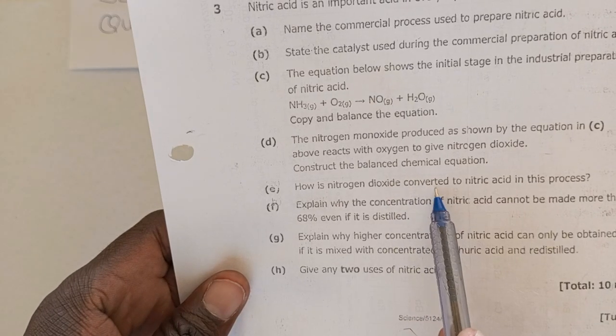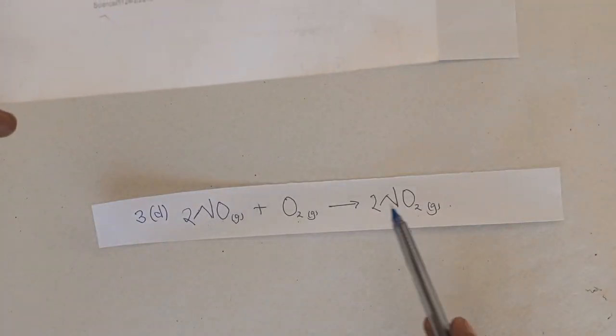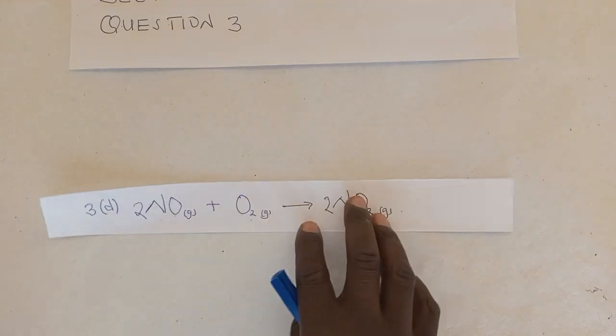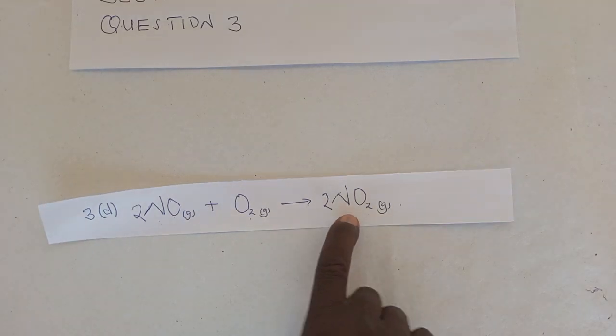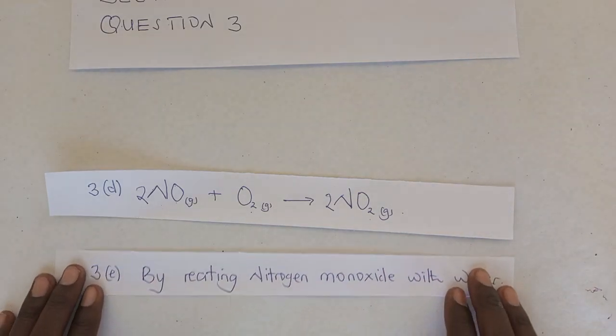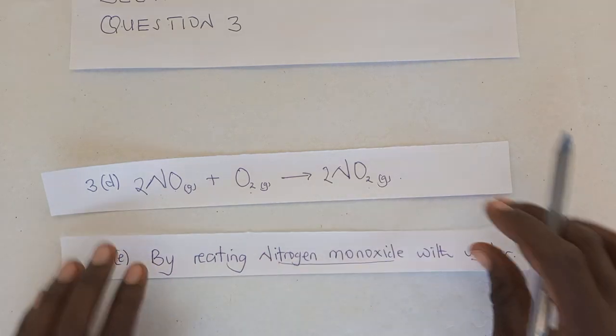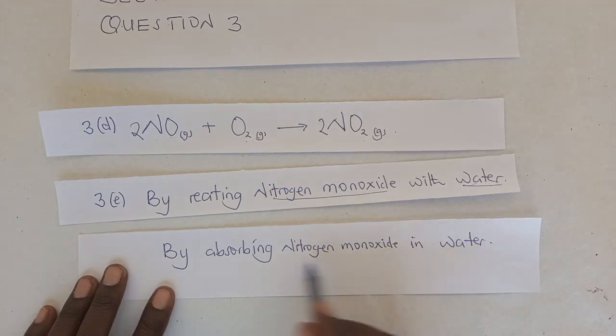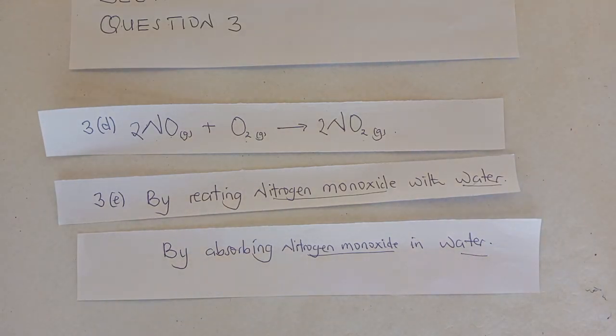We move on to question 3E. The equation 3E reads and says: how is nitrogen dioxide, the one that has been produced, this nitrogen dioxide which has been produced, how is it converted to nitric acid in this process? So remember I tried to talk about this. I briefly talked about it to say that the nitrogen dioxide is converted to nitric acid by reacting it with water. If you do not want to say by reacting it with water, you can say by absorbing nitrogen monoxide in water, or by absorbing it in water. This is the answer. You can use either this or this, you will still get a mark out of that.